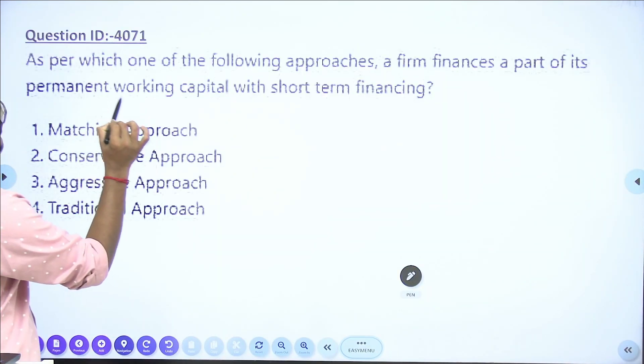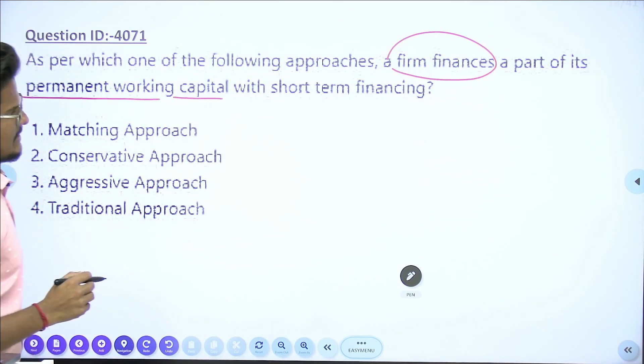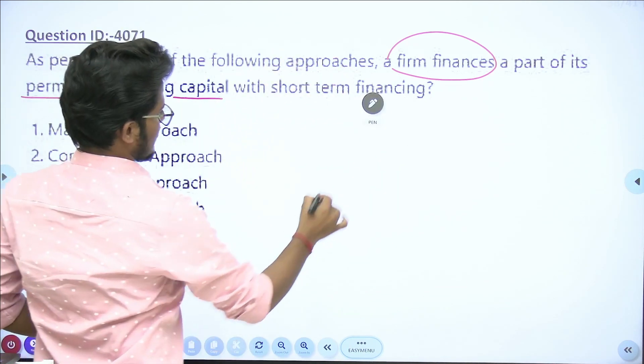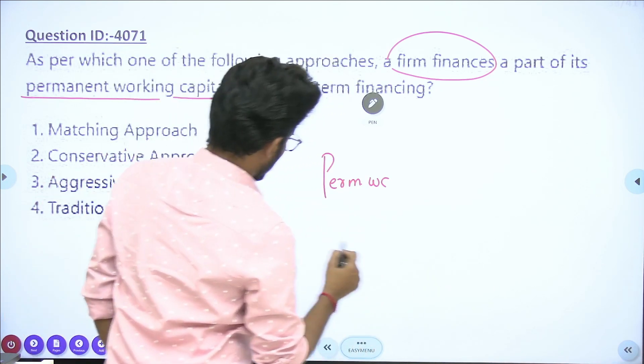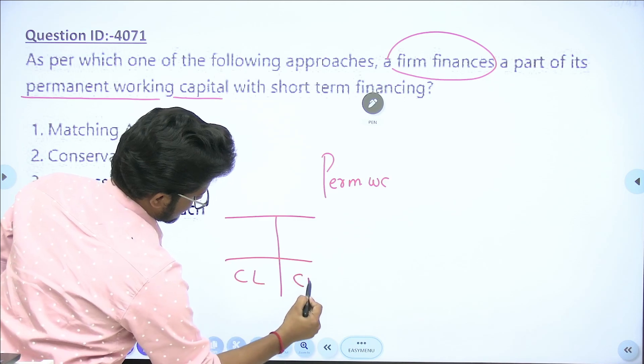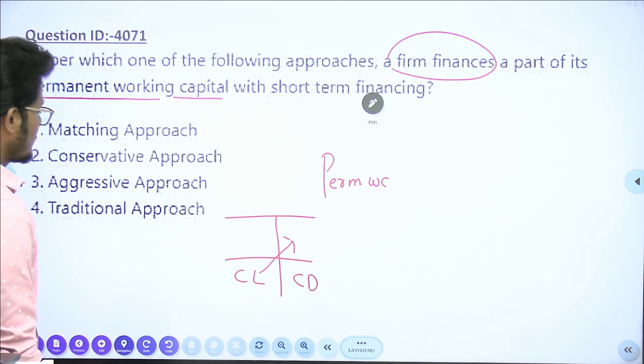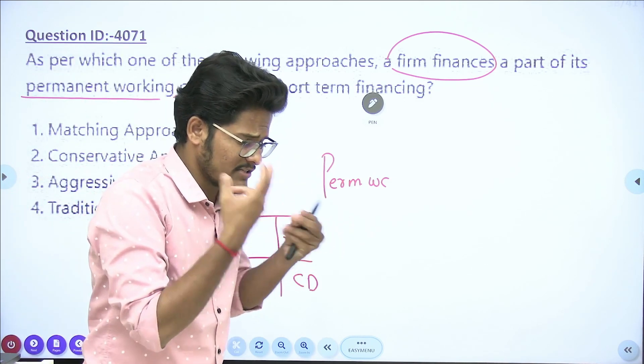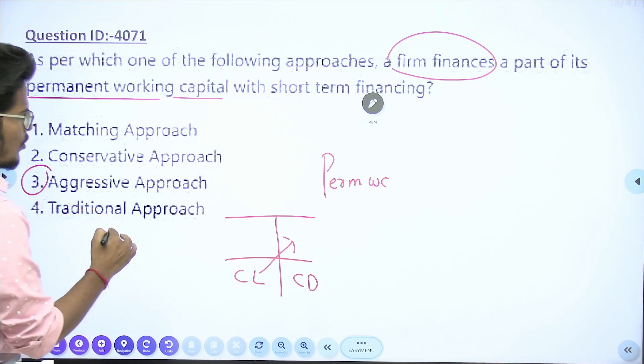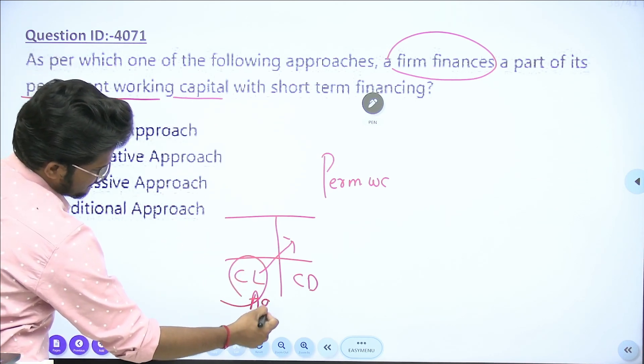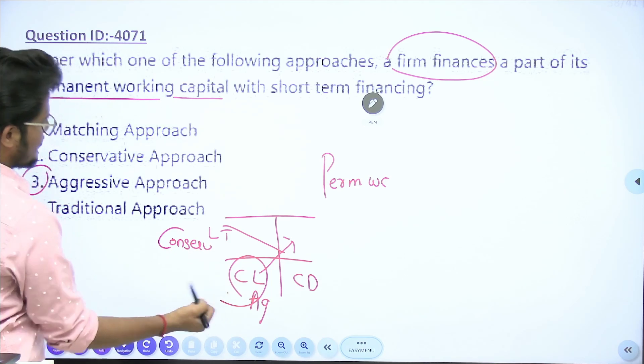As per which approach, firm finances part of its permanent working capital with short-term financing. They are saying permanent working capital from short-term financing. Short-term financing from current liability. More dependency on short-term sources means risky nature, aggressive approach. When you depend more on long-term sources, that will be conservative approach. Risk will be less there, here risk will be more.